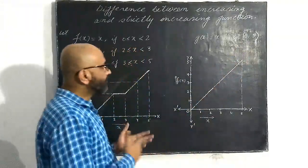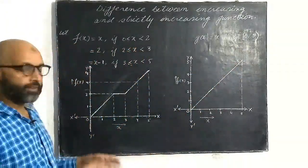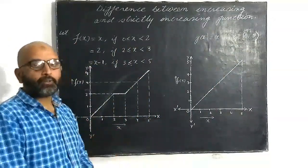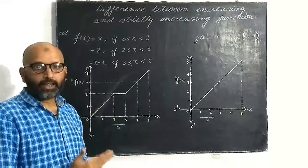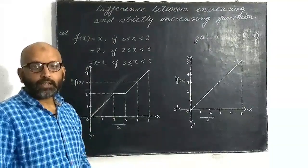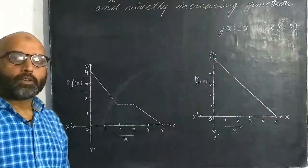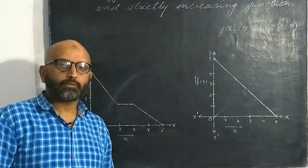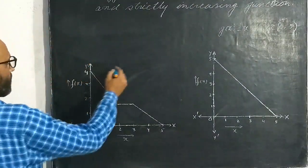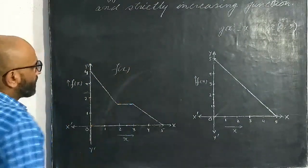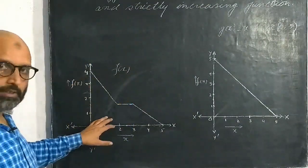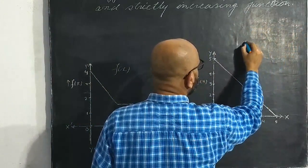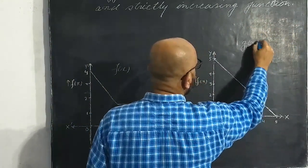This is the difference between an increasing function and a strictly increasing function. In the same way, we may define a decreasing and a strictly decreasing function. Suppose f(x) is a function whose graph is as shown, and the second function is g(x).